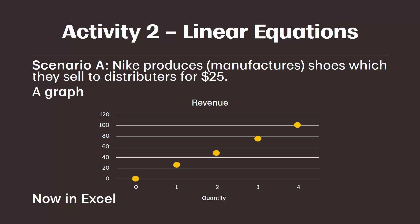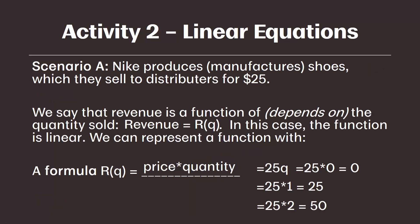Finally, we want to connect these plotted points with a line, which will finish our graph. Our graph proves the revenue function is a linear equation because it shows a straight line. The slope of our line is 25, which means the line goes up by 25 for every change in quantity. If you remember back to your algebra days, the slope is the coefficient that we multiply by the variable — in this case, that 25 is what we're multiplying by the variable Q. That's our slope.